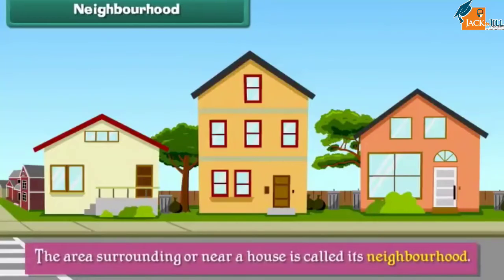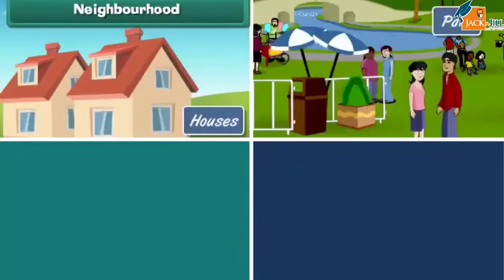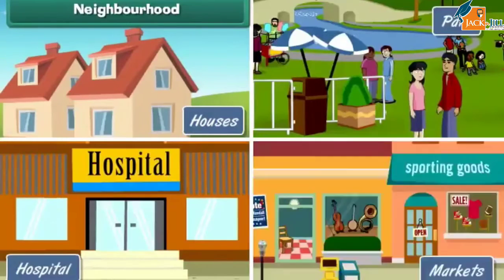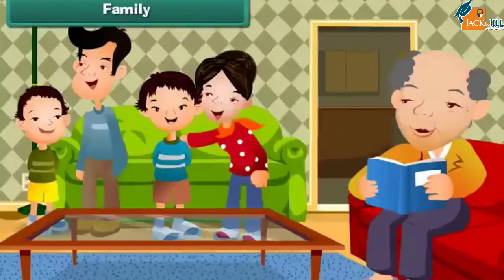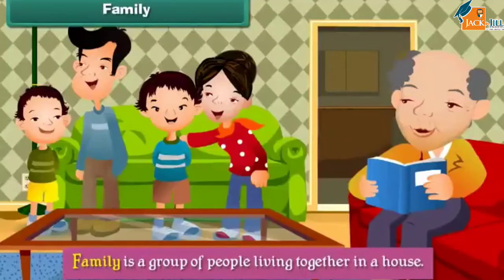The area surrounding or near a house is called its neighborhood. Nearby houses, parks, hospitals, and markets are all part of a neighborhood. Family is a group of people living together in a house. The group consists of parents and their children.